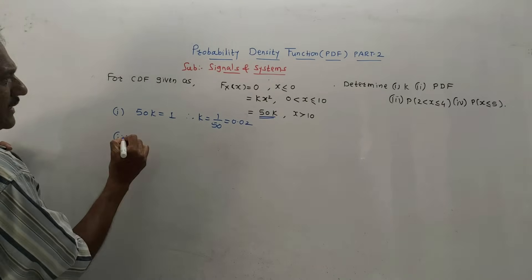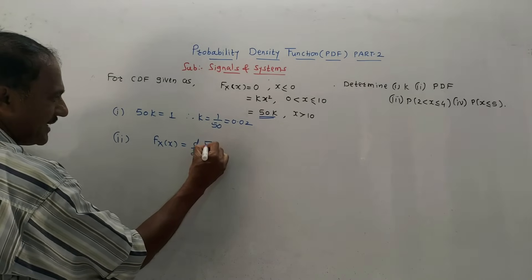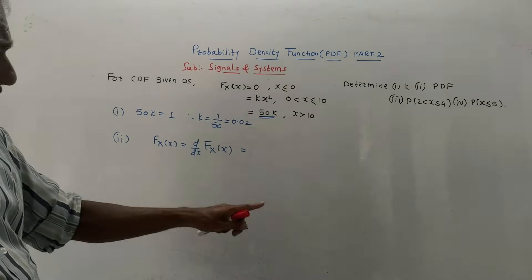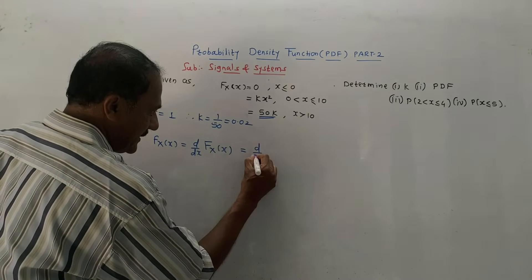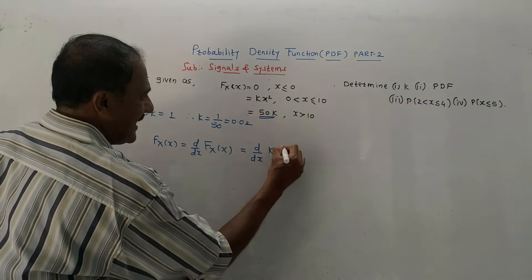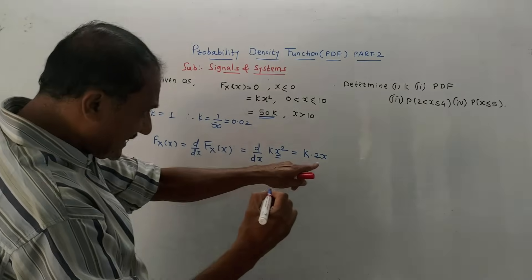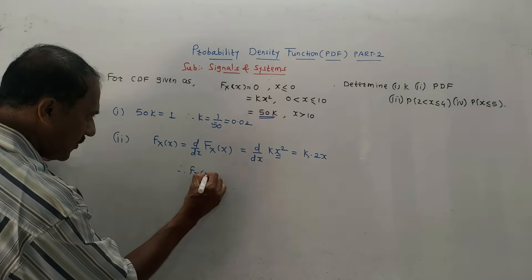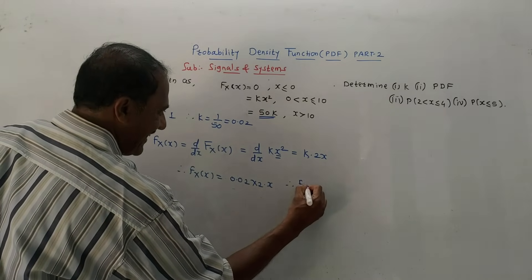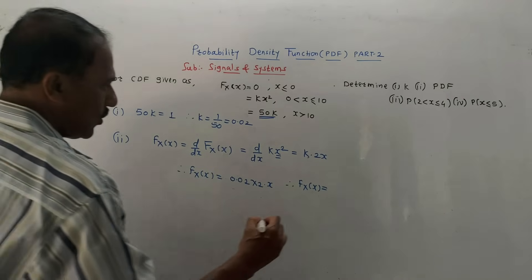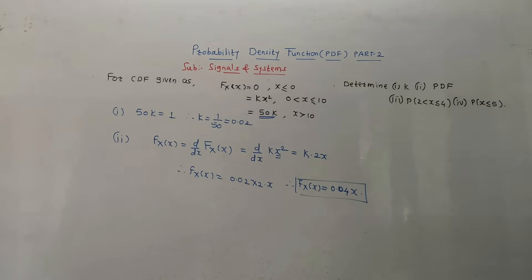For the second part, calculate the PDF. PDF is small f(x) and it is the derivative d/dx of CDF capital F(x). We consider only the term with variable x, which is K·X². Taking the derivative, d/dx of K·X² gives 2Kx. Substituting K equals 0.02, we get 0.02 into 2 into x. Therefore the final PDF is 0.04x.